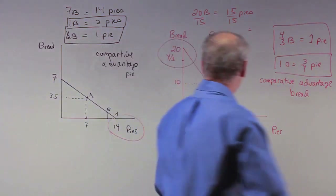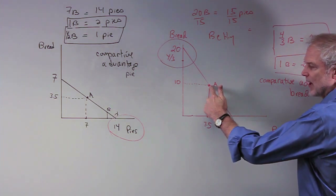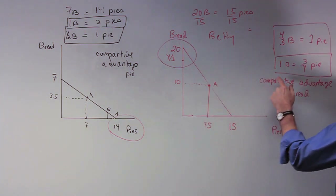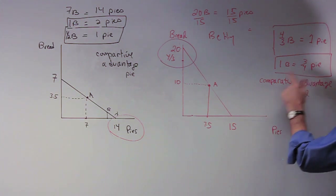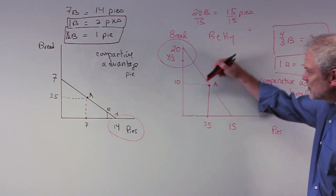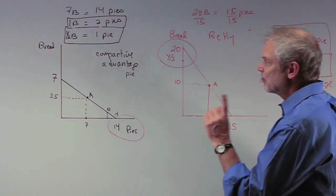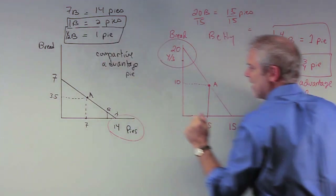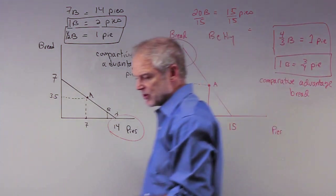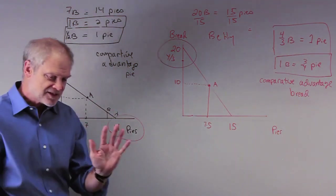Now go to Betty. She specializes in bread really well, but if she wanted another bread, how many pies does she give up? For every bread, it costs just three-quarters of a pie. So bread is relatively cheap for her and relatively expensive for Barney. The price for Barney is two pies per bread; the price for Betty is only three-fourths of a pie per bread. Therefore, the trading price will be somewhere between three-fourths of a pie and two pies.